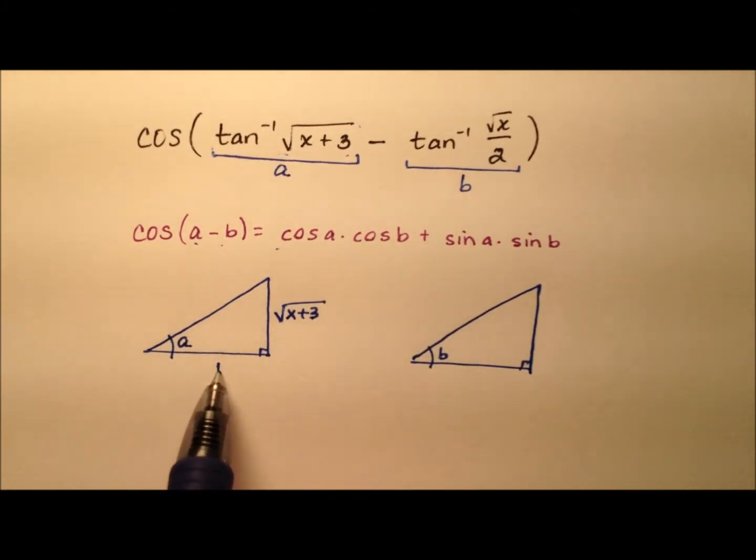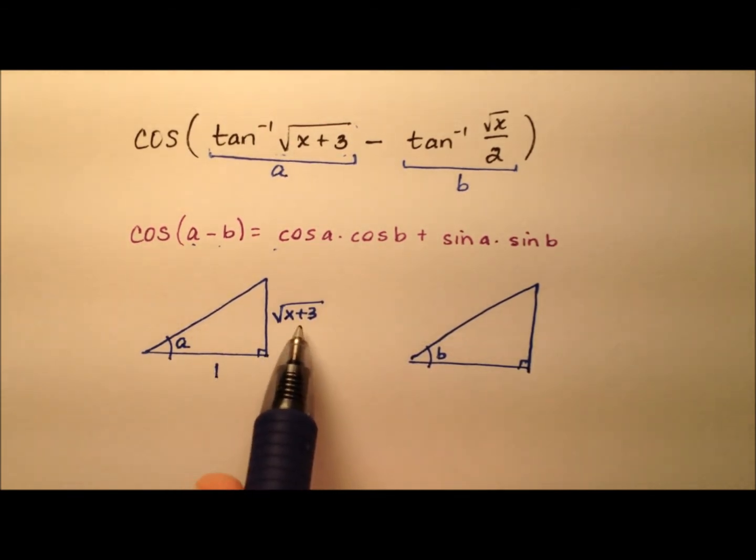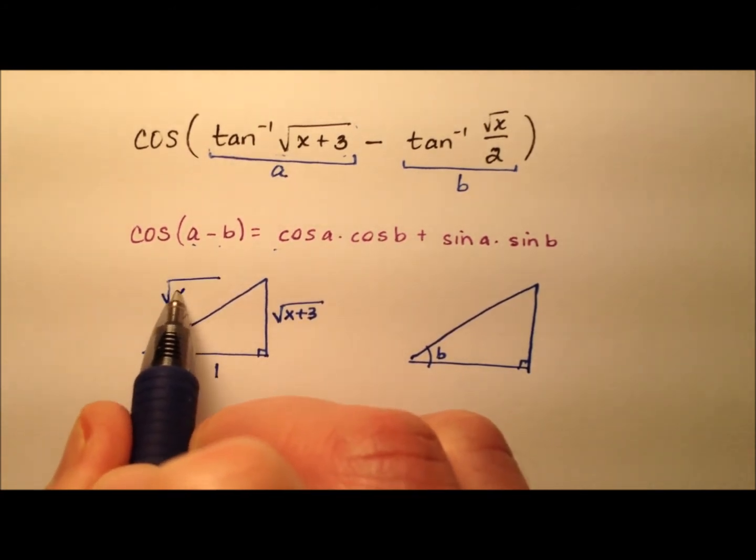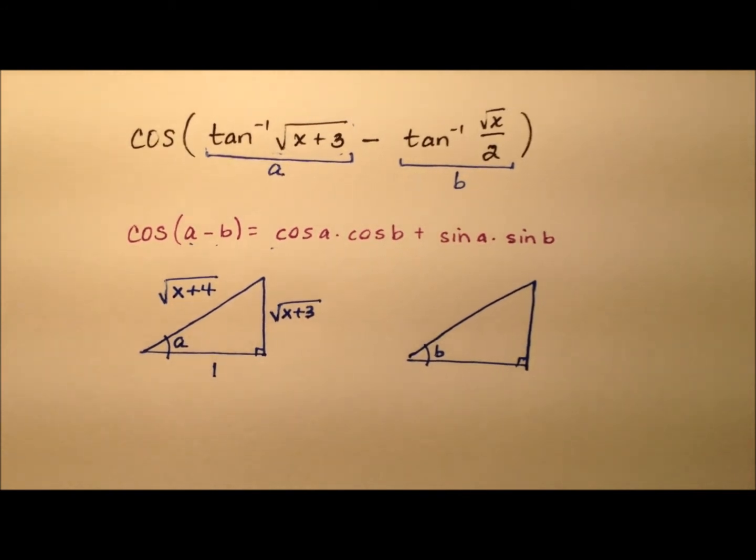We can go ahead and use the Pythagorean theorem now to find the length of this hypotenuse. It'll be 1 squared, which is 1, plus the square root of x plus 3 squared. So 1 plus x plus 3 makes x plus 4. And so the square root of that will be this hypotenuse, square root of x plus 4.